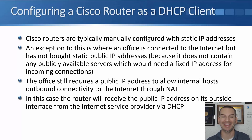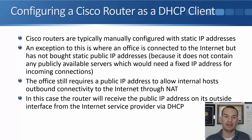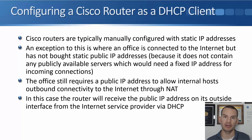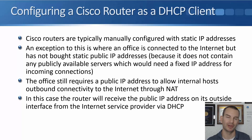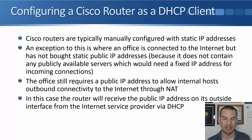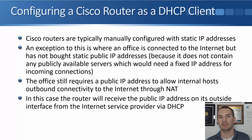That would be because the branch office doesn't contain any publicly available servers that need a fixed public IP address for incoming connections. So the company has decided not to pay for a range of fixed public IP addresses. In that case the office is still going to require at least one public IP address to allow internal hosts outbound connectivity to the internet using NAT, which we covered in an earlier lecture and will cover in more detail in a later section.